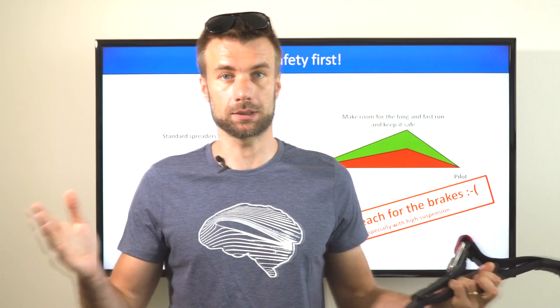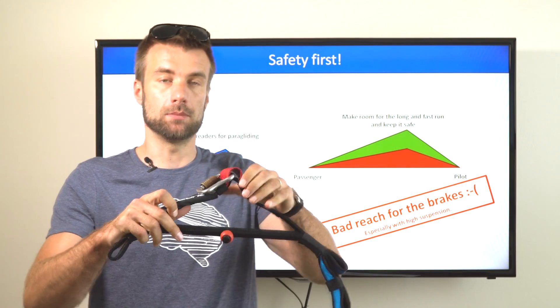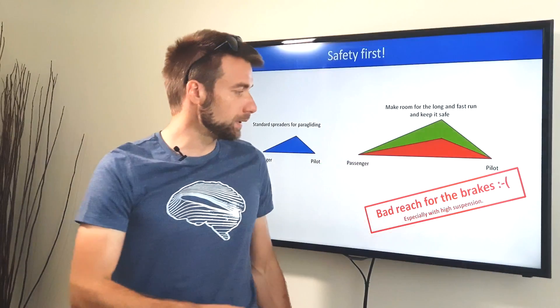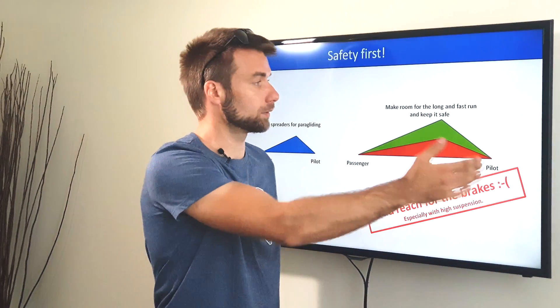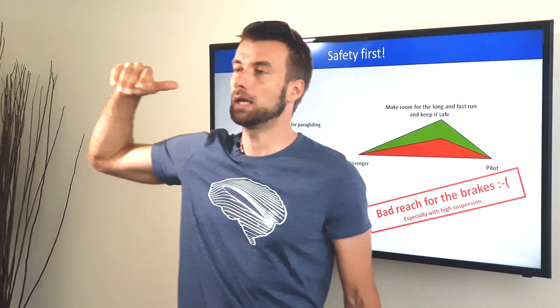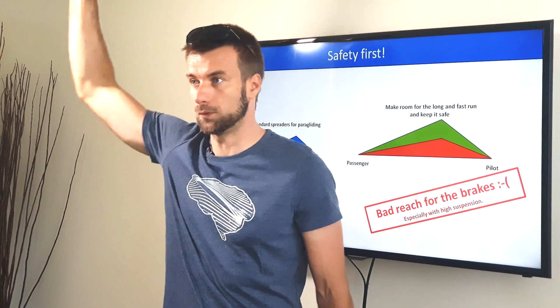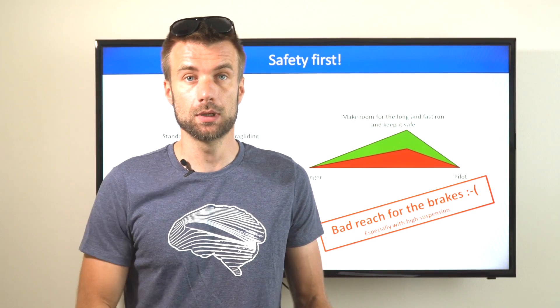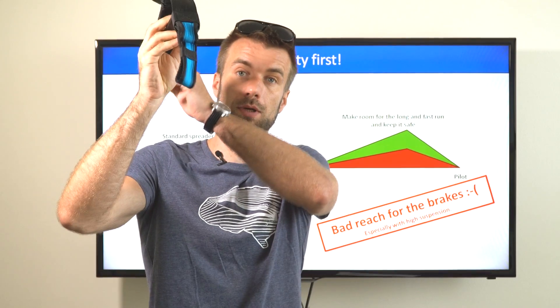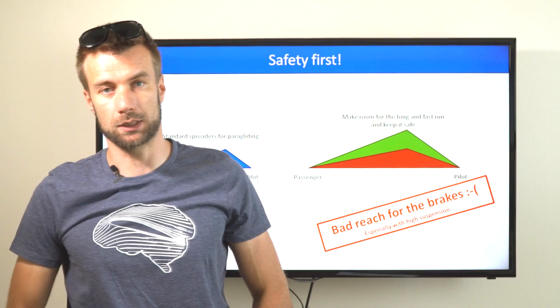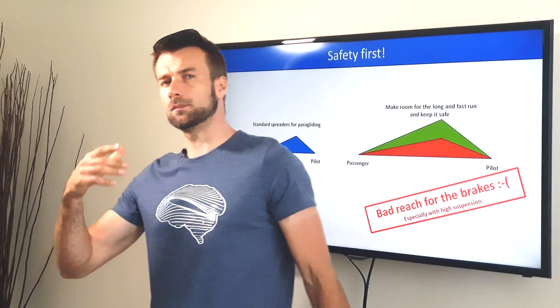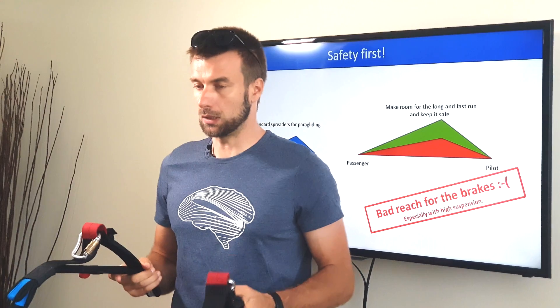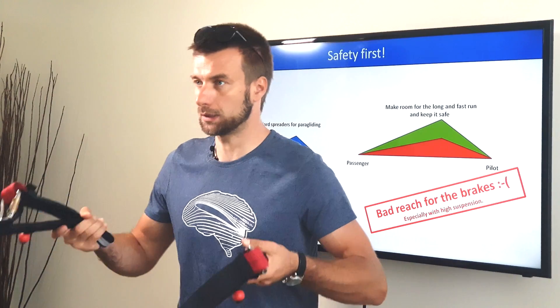The load distribution vector mathematics is the reason why you cannot just simply make standard paragliding tandem bars longer. You have to proportionally make it larger, which means that not only the distance between passenger and pilot gets longer, but also the main carabiner gets higher and you as a pilot have a bad reach for the brakes. This is especially emphasized with paramoters with high suspension system where your own carabiner is already pretty high and then you need to reach even higher for the tandem glider.